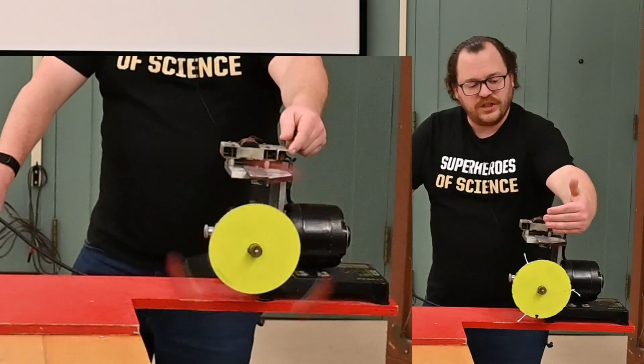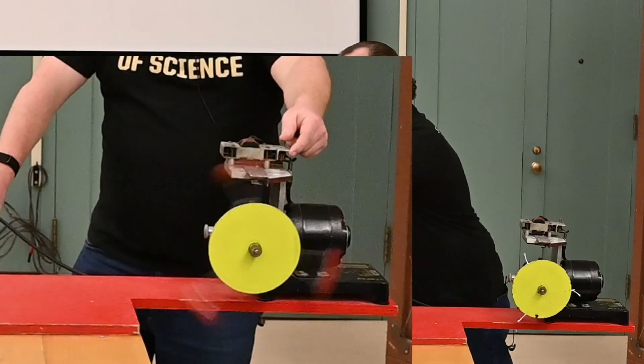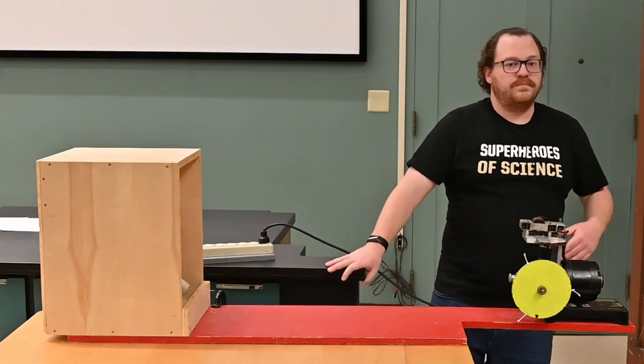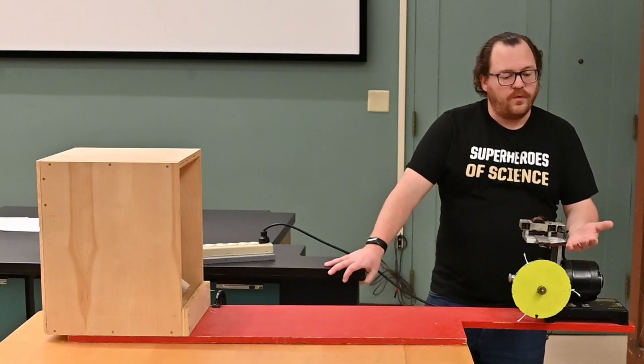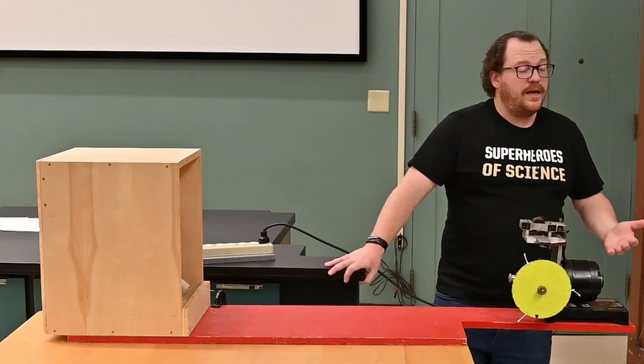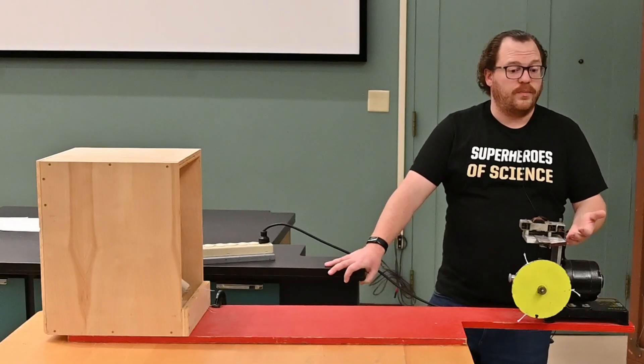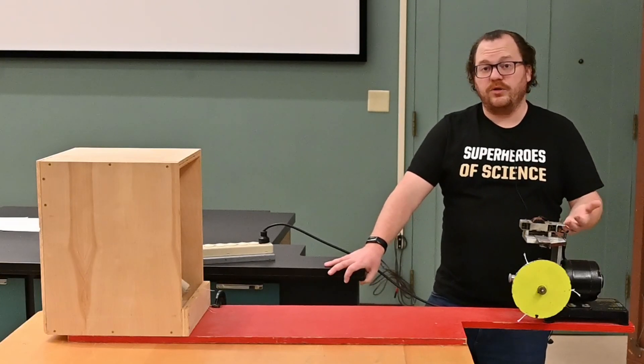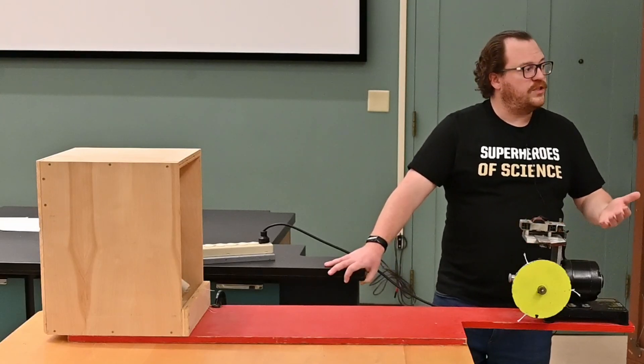But as soon as we cut that string, they keep moving in a straight line and they shoot into the catch box. Without any centripetal force, an object can't turn, it can no longer continue in circular motion. So Newton's first law says that it should just remain in motion at the same speed that it was already traveling.